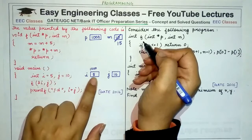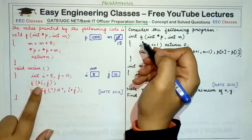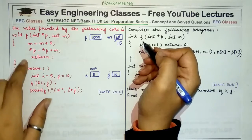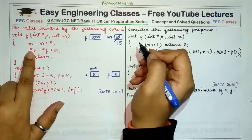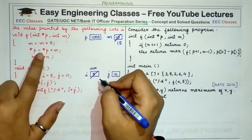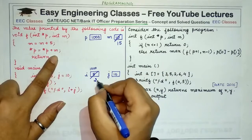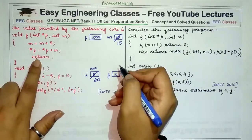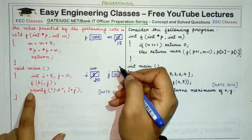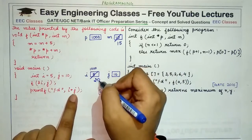Since we are assigning value 20 to the data present at variable i, the original value of i changes because the address of i was passed and we are changing the value of the variable itself. So i is changed to 20 — indirectly we are computing i plus m, which is 5 plus 15 = 20.